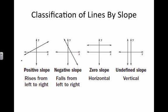We can classify lines by their slope. A line with a positive slope rises from left to right. A line with a negative slope falls from left to right. A line with zero slope is horizontal, and an undefined slope is vertical.